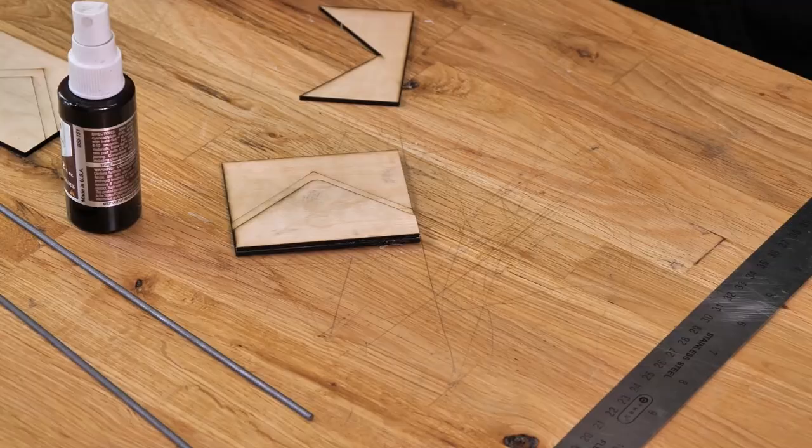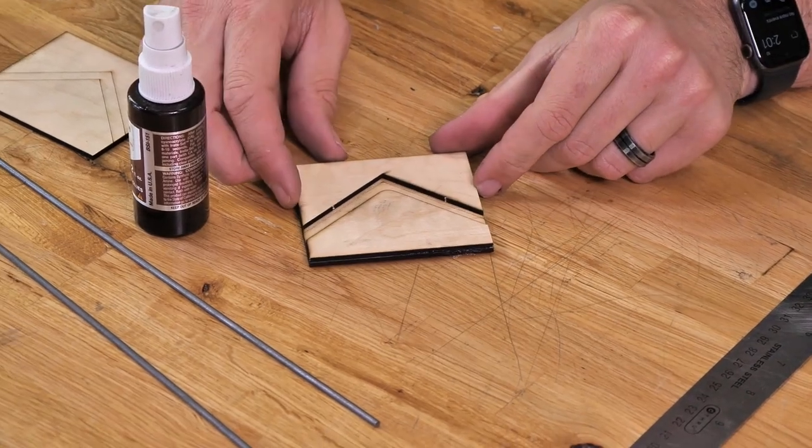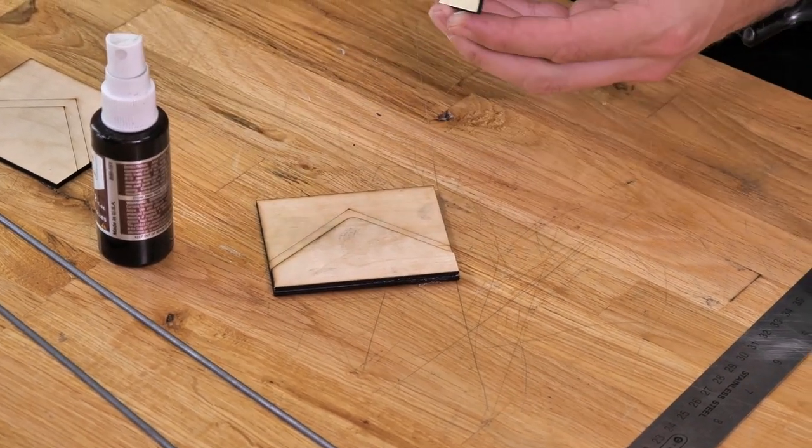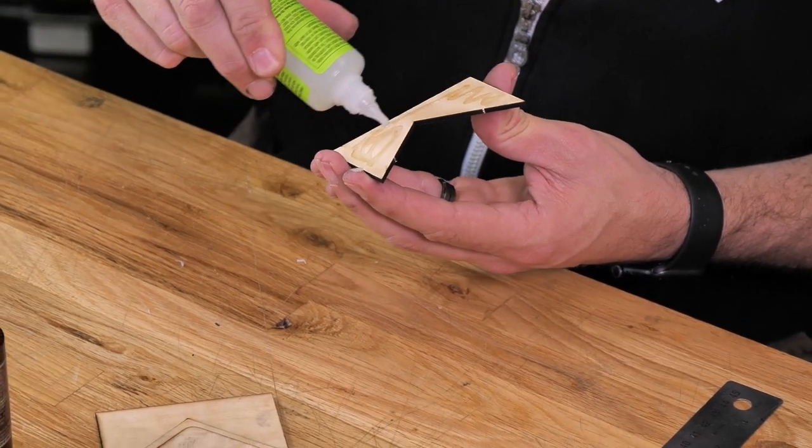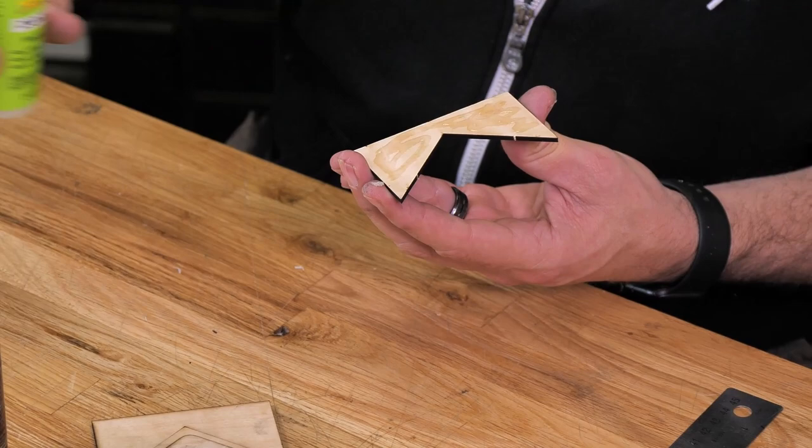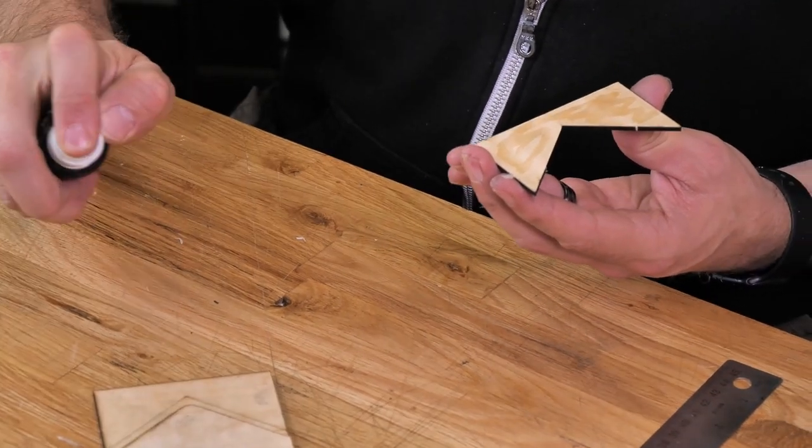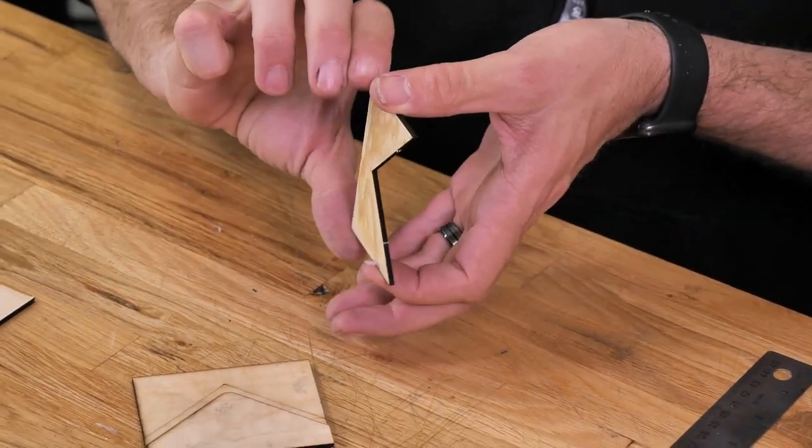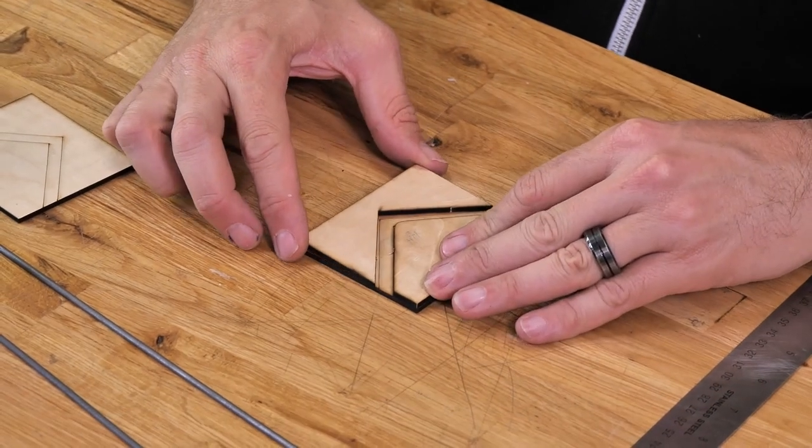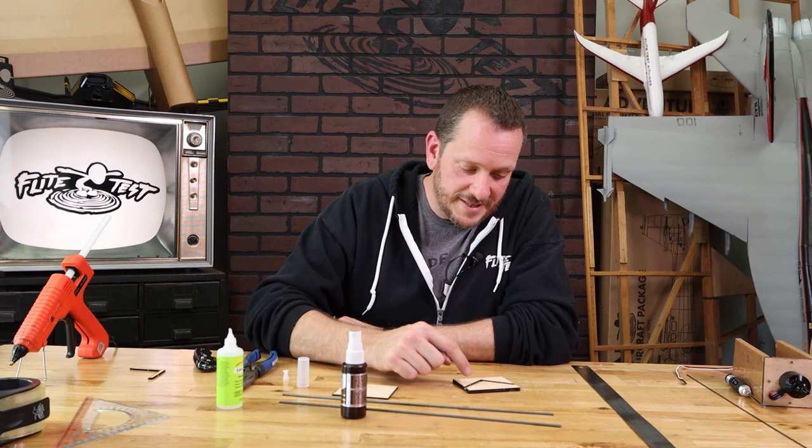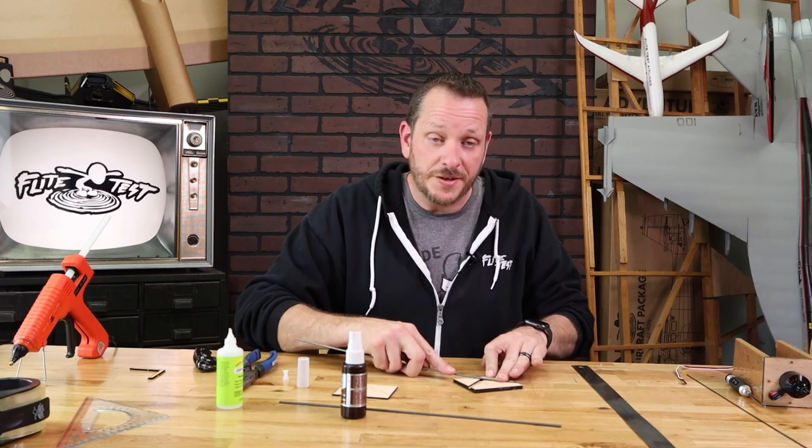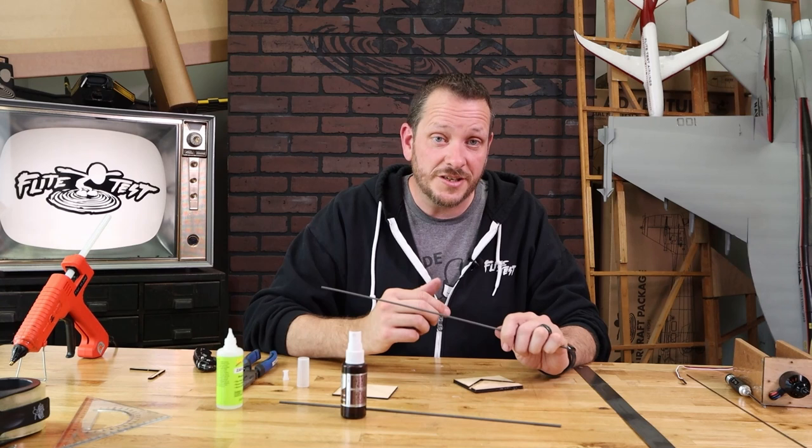All right, there's one side, and same process on the other side here. Just going to line that up, make sure that we have the orientation proper, spread some glue around, put some kicker on there, and then set it in place. You're going to see that this gives us a nice cavity for our landing gear wire to be able to notch down into. This is going to be really important to give it plenty of strength.